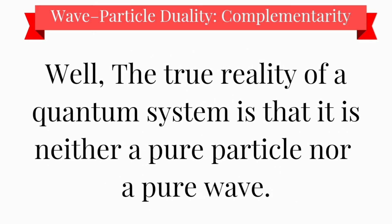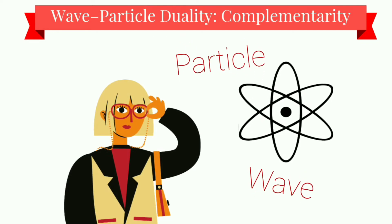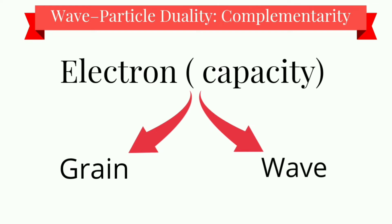The true reality of the quantum system is that it is neither a pure particle nor a pure wave. We see either the particle or wave behavior when we go through a different experiment. For instance, the act of looking at an electron will knock it out of its orbit. Depending on the types of equipment used to observe an electron, the electron has the capacity to display either particle or wave features.